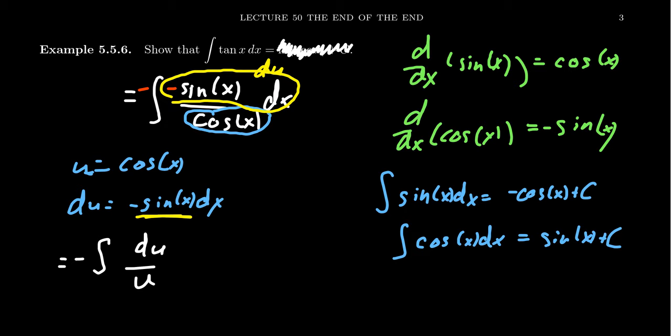And so we want to find an antiderivative of one over u. And so recognizing the antiderivative of one over u is just the natural log. You get negative the natural log of the absolute value of u plus a constant. In which case, that's the same thing as negative the natural log of the absolute value of cosine of x dx. Because after all, our u was cosine.